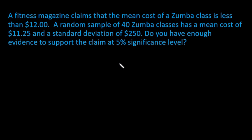Hi, for this video we have a fitness magazine that claims the mean cost of a Zumba class is less than $12. A random sample of 40 Zumba classes has a mean cost of $11.25 and a standard deviation of $250. We are looking to see if we have enough evidence to support the claim that the mean cost is less than $12 at a 5% significance level. This tells me we are running a hypothesis test.